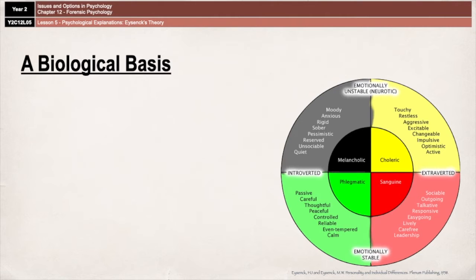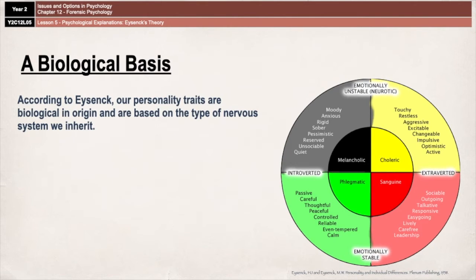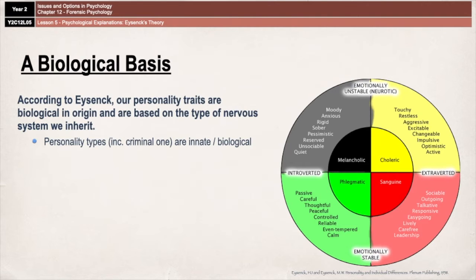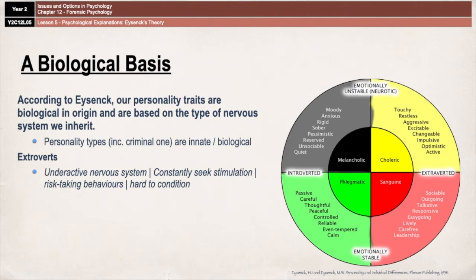According to Eysenck, our personality traits are biological in origin, and they come about through the type of nervous system that we inherit from our parents. So that means that our personality, according to Eysenck, is innate — it's biological, and we can't do anything about it. There are three parts of personality that Eysenck says are particularly important for a criminal personality. Extroverts have an underactive nervous system, so they are constantly seeking excitement and stimulation, which results in them being more likely to engage in risk-taking behaviours. He also said that they are much harder to condition than other people, meaning they are less likely to learn from their mistakes.